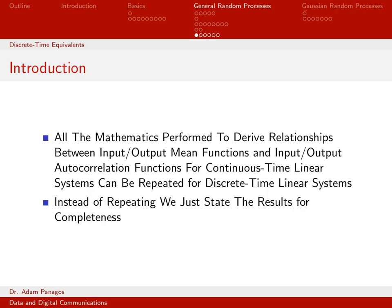We've developed a variety of equations that relate the input mean function to the output mean function, and the input autocorrelation function to the output autocorrelation function for continuous time systems. Those equations cover different combinations of assumptions — whether the system is a linear system or a linear time-invariant system, and whether the input process is a general process or a wide-sense stationary random process.